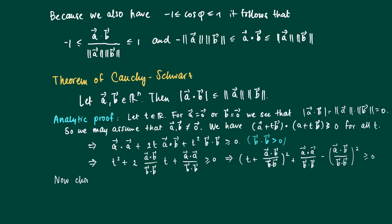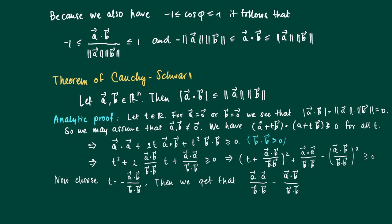Now we choose a particular t: suppose we take t equal to minus the inner product of a with b divided by the inner product of b with b. Then the square term cancels out and becomes 0, so we have that the inner product of a with a divided by the inner product of b with b, minus this remaining term, is at least 0.